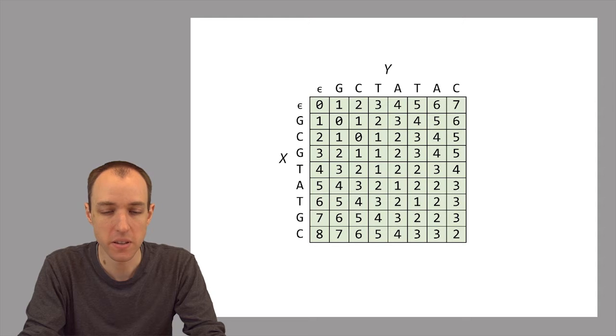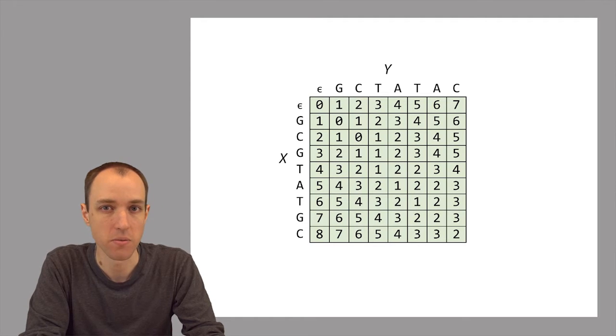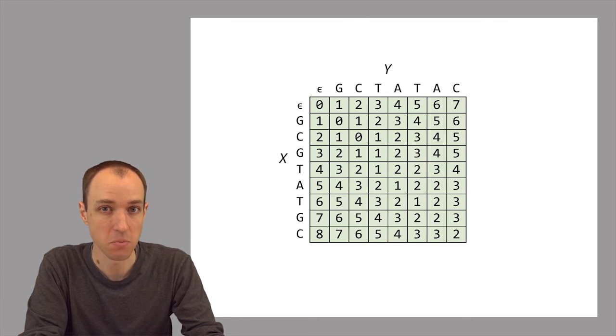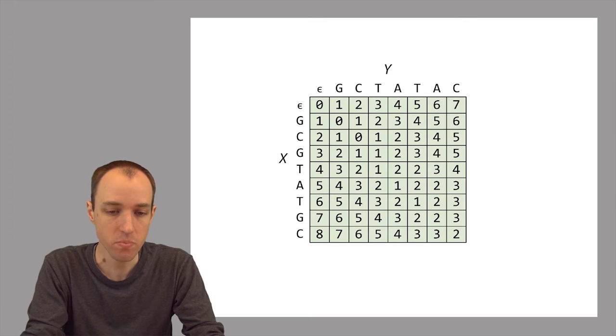So it doesn't always make sense to penalize all these differences the exact same amount. So what if it turned out that gaps were a lot less frequent than substitutions? Well, then it might make sense to penalize the gaps more than the substitutions. Or what if it turned out that certain substitutions, certain base-to-base substitutions, were more likely than others? That we might want to penalize them less than those others. So, in fact, both of these things are the case.